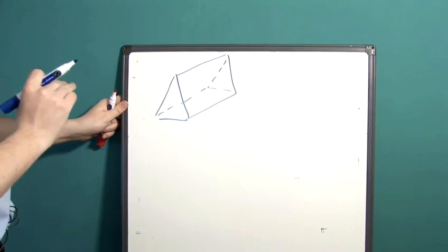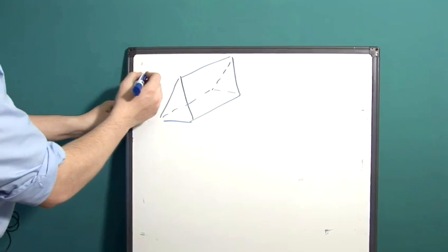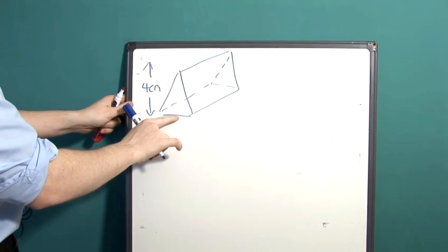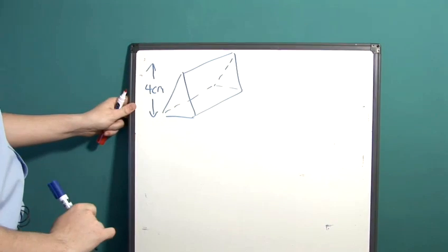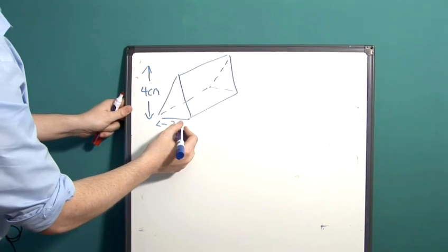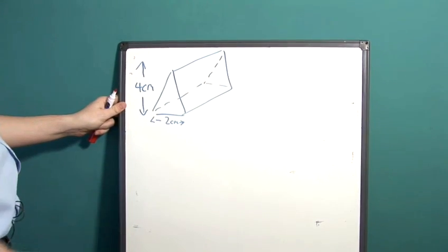A triangular prism has three important dimensions that we need to be concerned with. First of all, we have our height. Let's say it's four centimeters and this is from the lowest point of the shape to the highest point. We also have the width or the base of the triangle on the base shape.